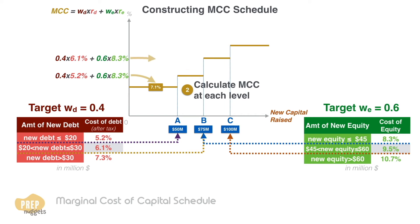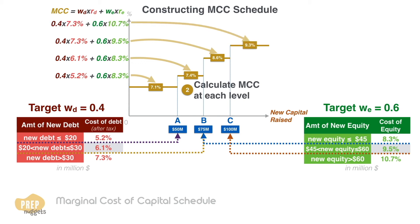For the second tier, capital raised between $50 and $75 million: cost of debt is 6.1%, while cost of equity remains at 8.3%. Applying the weights, we get 7.4%. For the third tier, capital raised between $75 and $100 million: cost of debt is 7.3%, while cost of equity rises to 9.5%. Applying the weights, we get 8.6%. At the highest tier, capital raised above $100 million: cost of debt is 7.3% and cost of equity is 10.7%. Applying the weights, we get 9.3%.